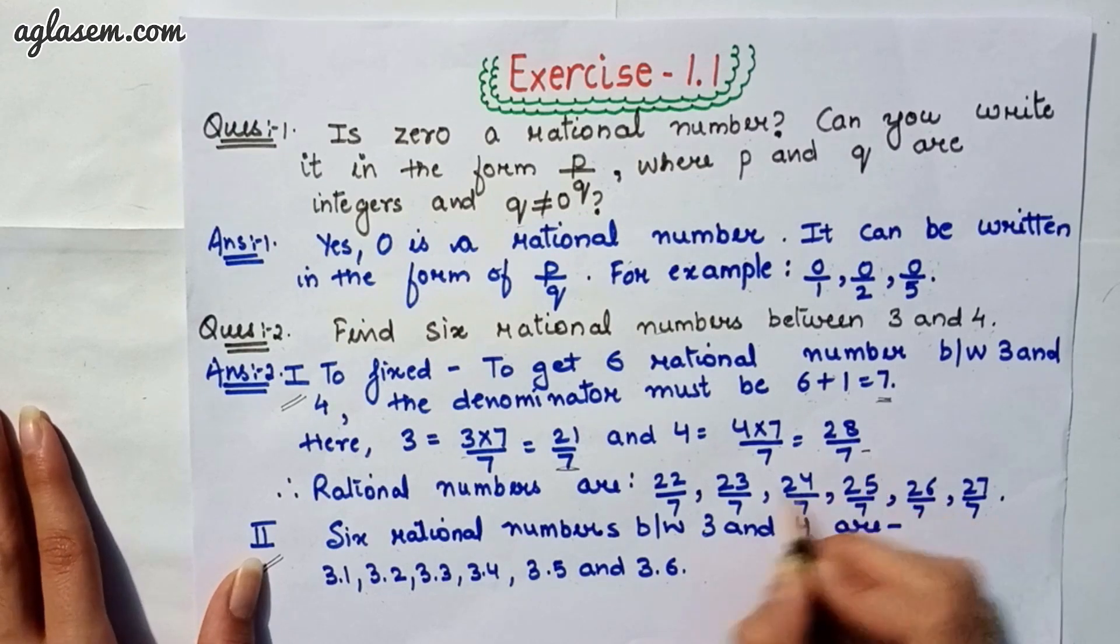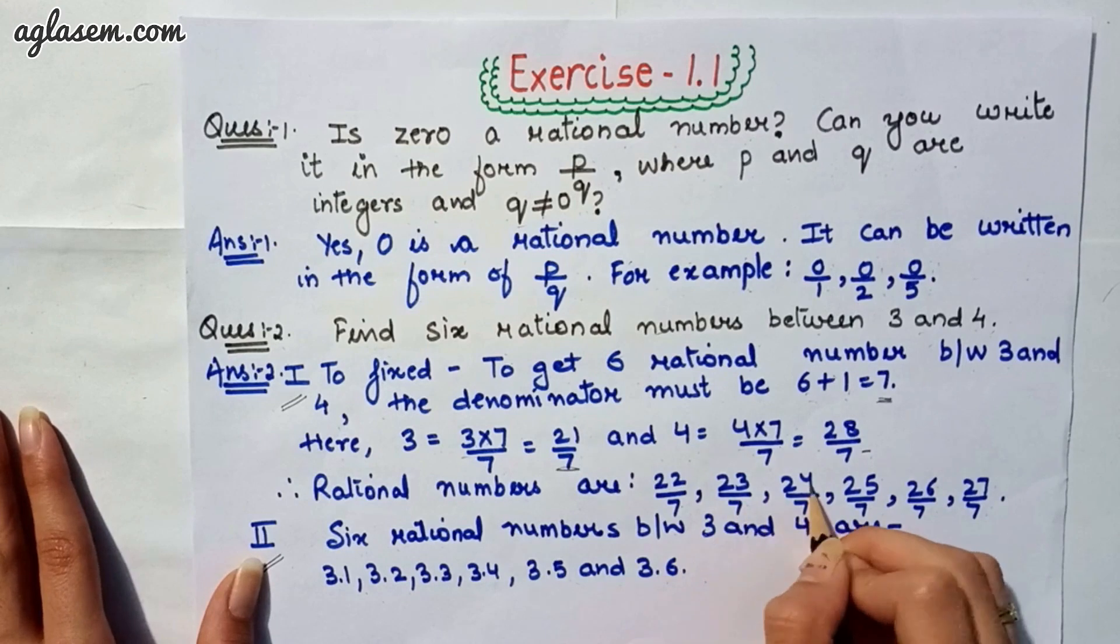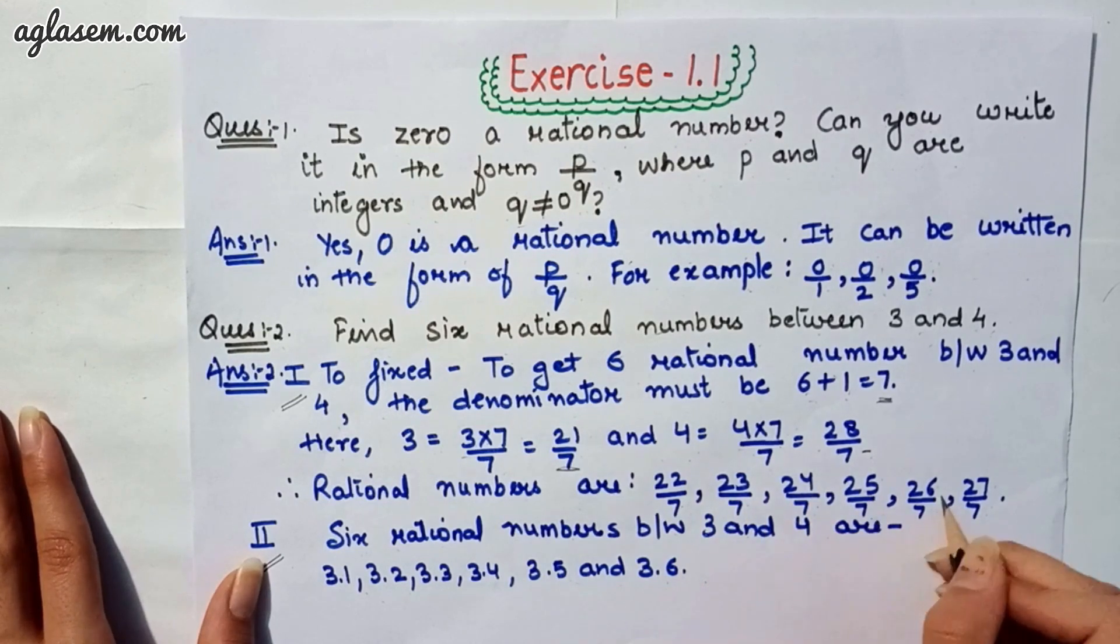So, the rational numbers are 22 upon 7, 23 upon 7, 24 upon 7, 25 upon 7, 26 upon 7 and 27 upon 7.